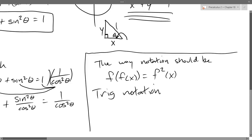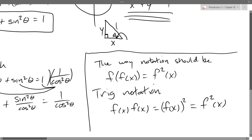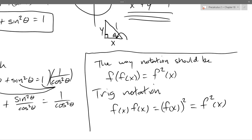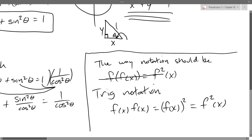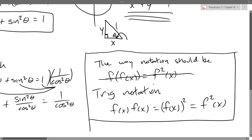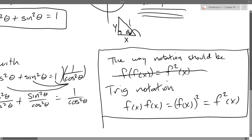Trig notation follows this convention. Our functions are sine, cosine, tangent, cotangent, cosecant, and secant — I'll just use the letter f to represent any of them. If you square it, we'd normally write it as take f(x) and square that, but in trig notation this is written as f²(x). So that's a little confusing. Generally as a mathematician I think of squaring a function as doing it twice, but that's not the way it is in trig. Unfortunately, people have been doing it this way for well over a hundred years and it's not going to change anytime soon.